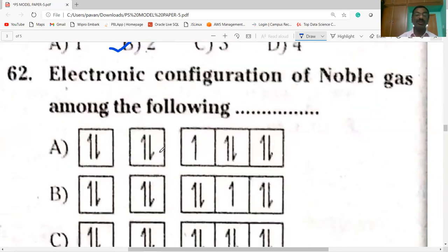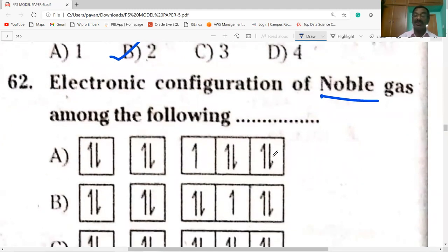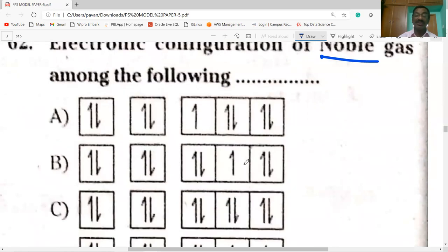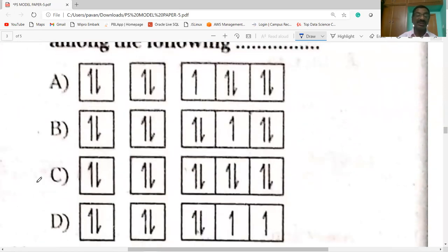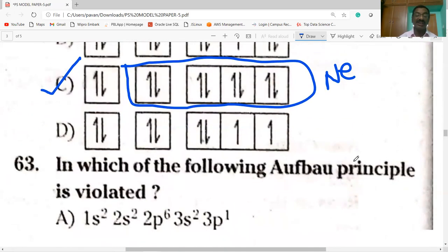Then electronic configuration, noble gas among the following. Noble gas has eight electrons in their valence shell except helium. Here there is no eight electrons, here also wrong. Here it is the correct option, C is the correct option. It is the valence shell: 2 plus 2, 4 plus 2 plus 2 equals 8. It is nothing but neon, tenth element. Option C is the correct option.